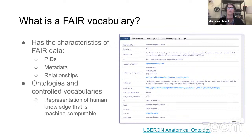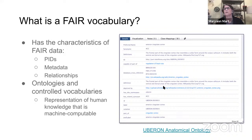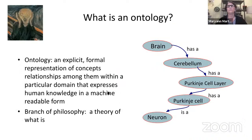Here you see an example from a community ontology called Uberon, which is an anatomical ontology. It has a preferred name, an identifier with a full URI, relationships to other things, and mappings to other identifier systems. This would be what we consider a FAIR ontology — a FAIR vocabulary — because it is represented in OWL2, a common interchange language for ontologies that allows reasoning and other operations to be performed on this vocabulary.